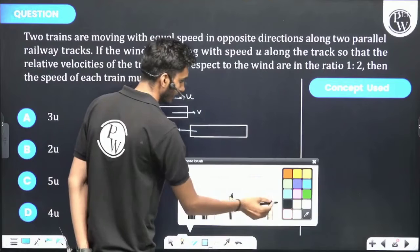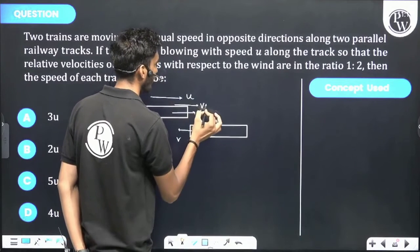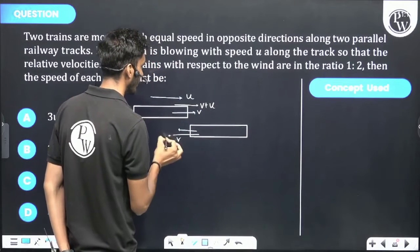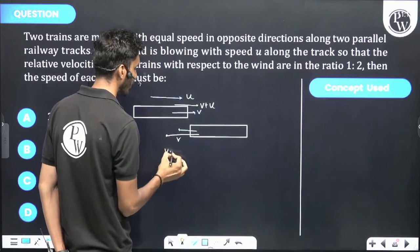So this train is going to be how much? v plus u. This train is going to be v minus u.